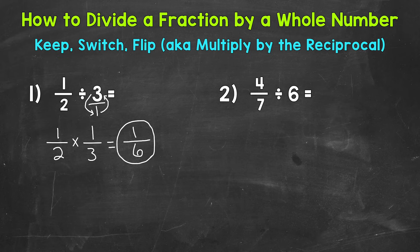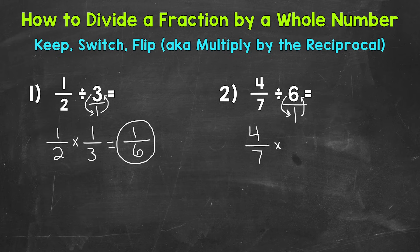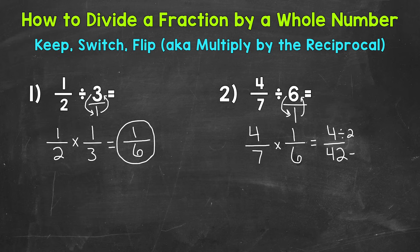One half divided by three equals one sixth. Let's move on to number two, where we have four sevenths divided by six. Keep, switch, flip: keep four sevenths, switch to multiplication, then flip the six by writing it in fractional form over one and flipping to get one over six. Multiply straight across: four times one is four, and seven times six is 42, giving us four over 42. Four and 42 have a greatest common factor of two, so dividing each by two gives us two over 21 as our final simplified answer.